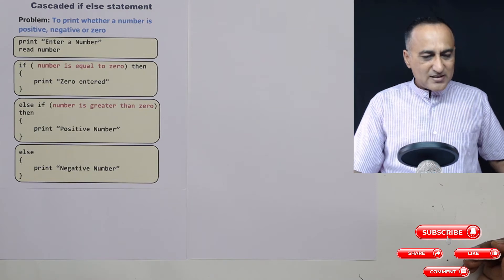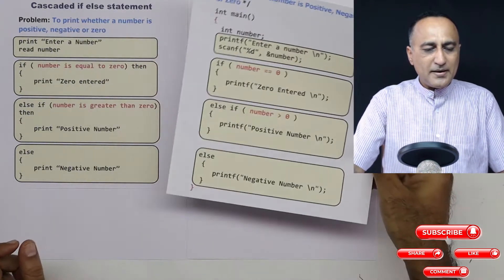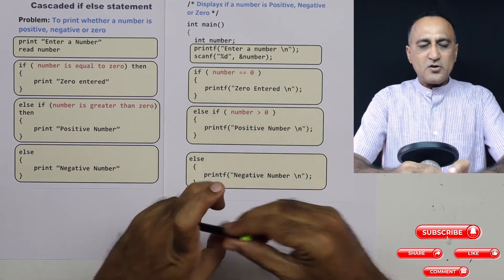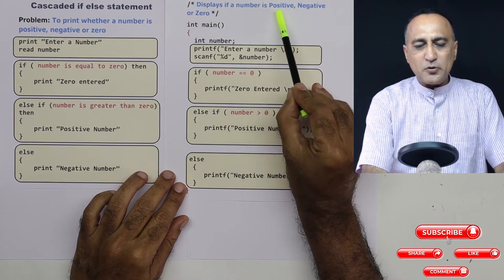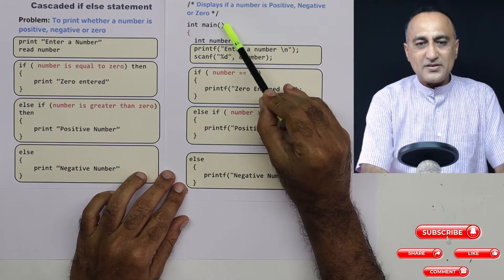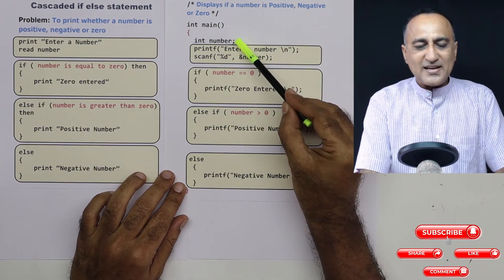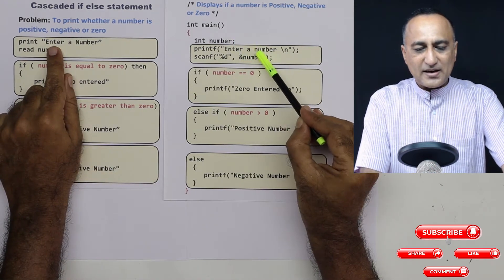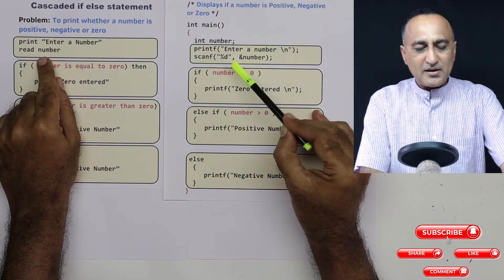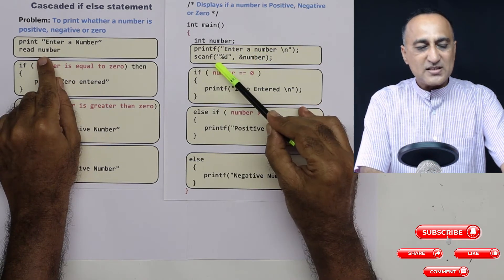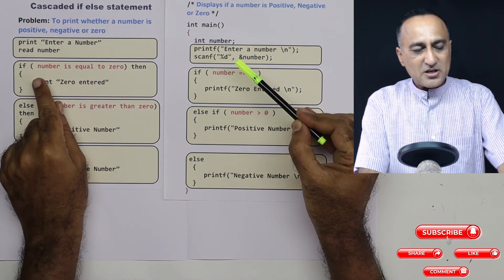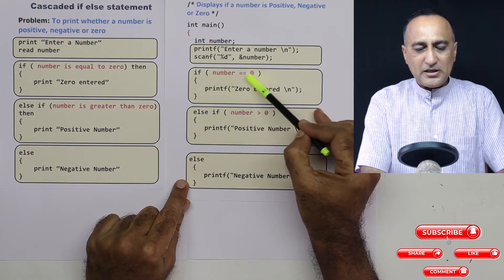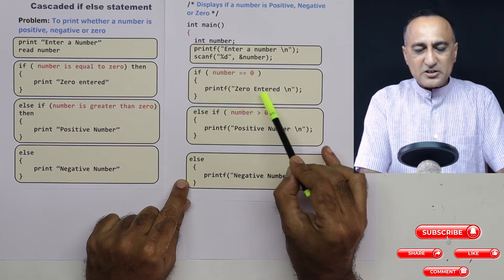If I had to write a C program to implement this logic, it would be quite simple. The program displays whether an input number is positive, negative, or zero. First I declare a variable int number, ask the user to enter a number, and read it using scanf. Then I check if number is equal to zero and print 'zero is entered'.